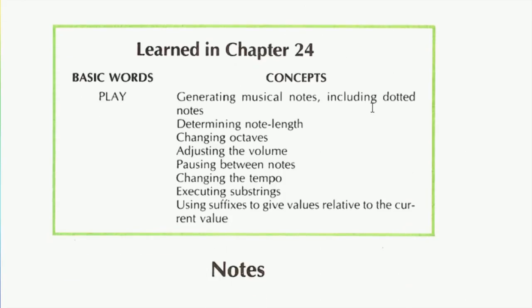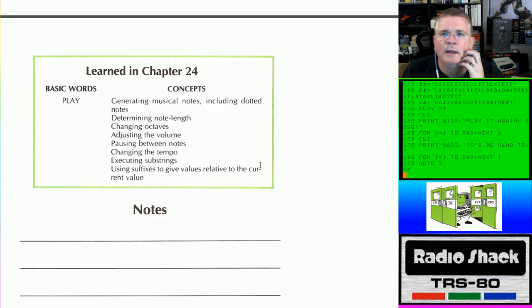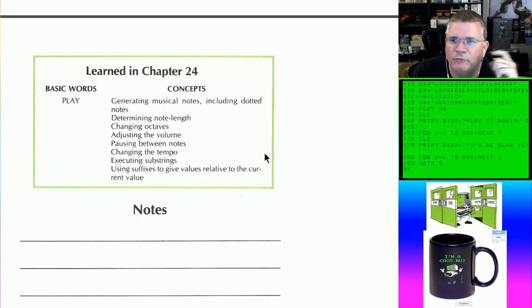What did we learn in chapter 24? We learned how to generate musical notes, include dotted notes, determine note length, change octaves, adjust volume, pause between notes, change the tempo of notes, execute substrings, and use suffixes to give values relative to the current values.